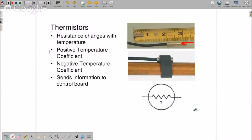Thermistors that have a positive temperature coefficient - as the temperature increases, the resistance increases on that thermistor. A negative temperature coefficient thermistor - as temperature decreases, resistance increases.